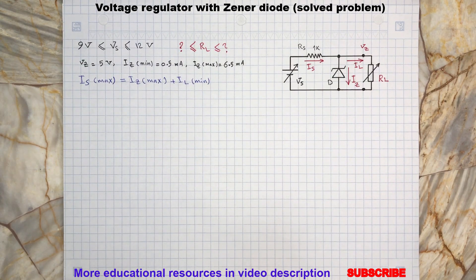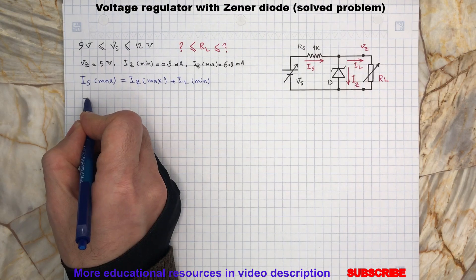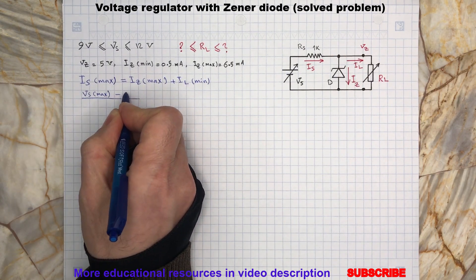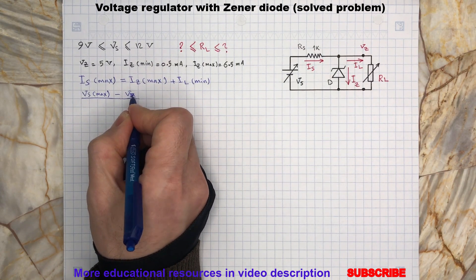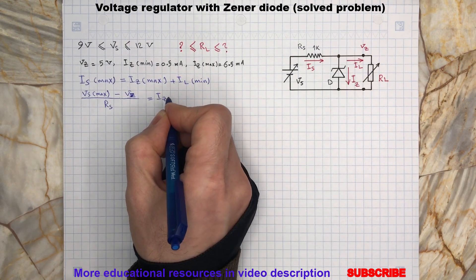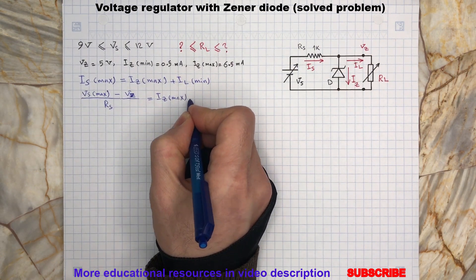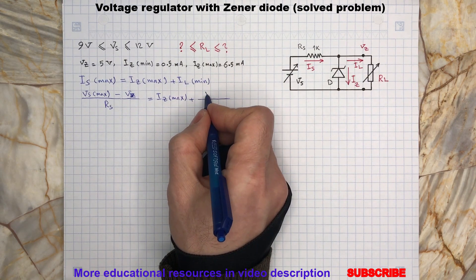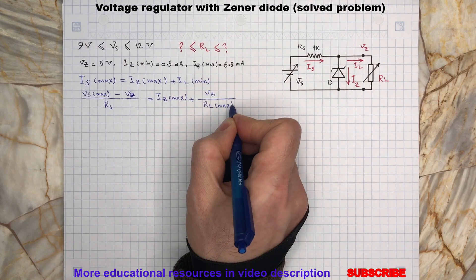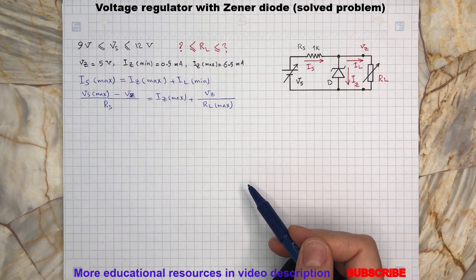Now since the desired output voltage is 5 volts, we can rewrite the above equation as follows. Let's plug in the known variables and solve the equation for RL_max.